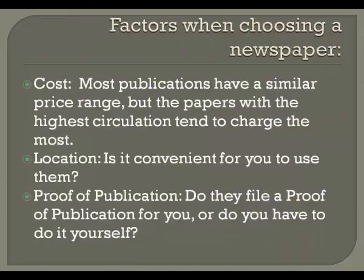When choosing your newspaper, there are a number of factors you may wish to consider. The first factor is cost — in the Sacramento area, the range is typically between about $45 and $300 depending on circulation. The second factor is the location of the newspaper and how convenient it is for you to pick up documents. Also consider whether that newspaper files the proof of publication for you or requires you to file it yourself, as a newspaper that submits the proof of publication to the court on your behalf saves you an extra step. A list of newspapers is available from the Sacramento County Public Law Library.